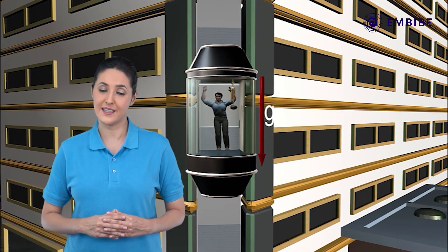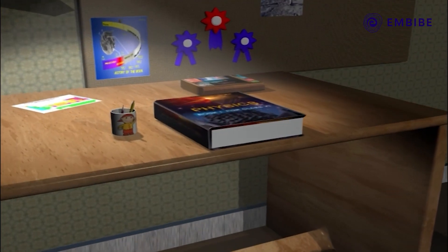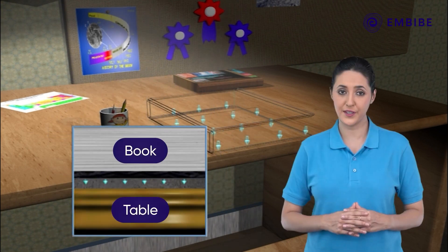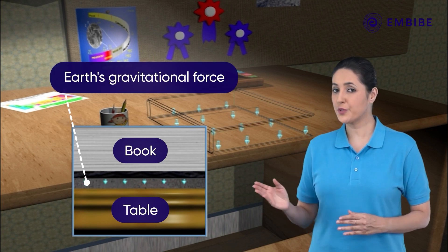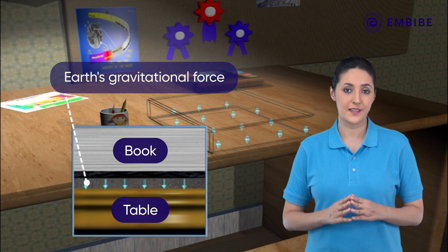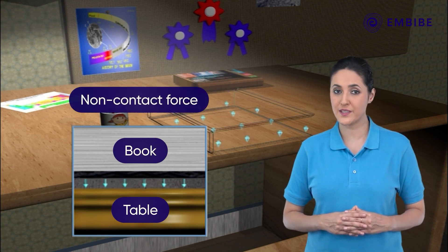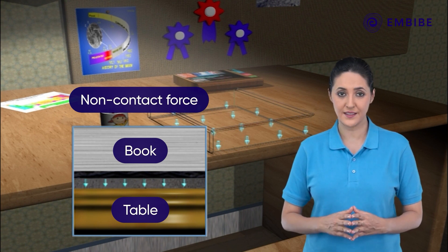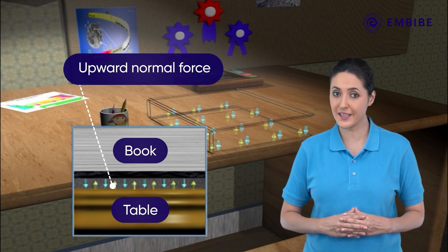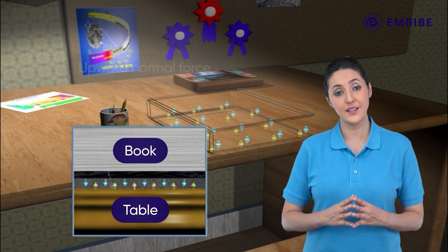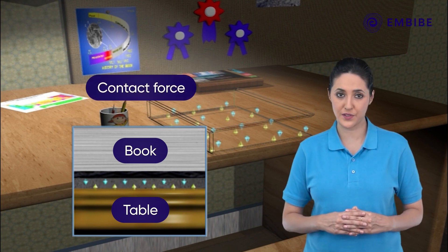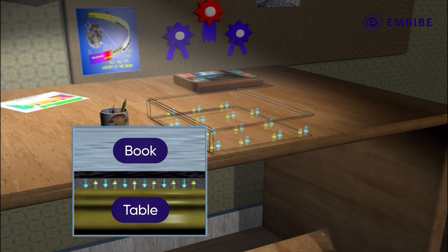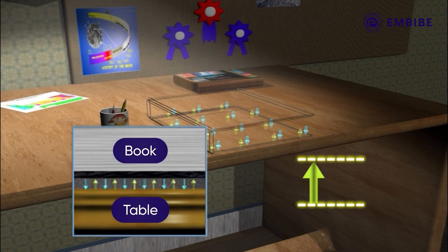Let us understand weightlessness in detail. Suppose a book is kept on a table. There are two forces acting on this book. First is the force of the Earth's gravitational field, which pulls it downwards — this force is termed a non-contact force as it does not require the bodies to be in physical contact. Second is an upward normal force exerted by the table, which pushes it upwards — this is termed a contact force, and it exists only if there is physical contact between the two bodies.